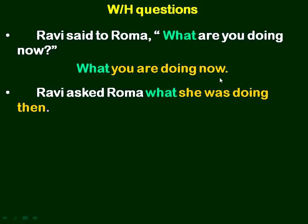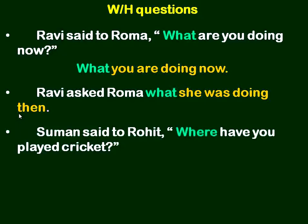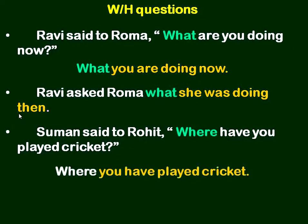She was doing then. So 'now' changes into 'then.' The word related to time changes in indirect speech. So 'now' becomes 'then.' I hope you understood it. Let us understand one more example. Suman said to Rohit, 'Where have you played cricket?' First, we need to change that interrogative into assertive. 'Where' — no change. 'Have you played' becomes 'you have played.' You need to interchange the subject and helping verb.